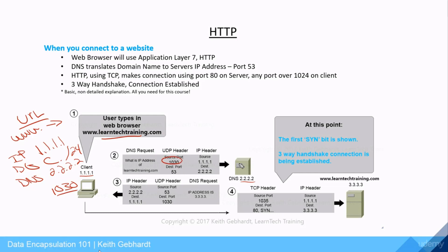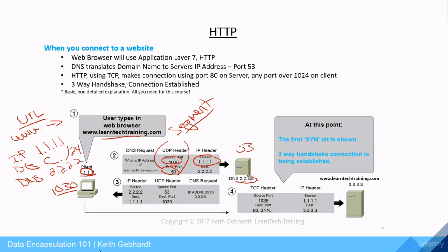Port 1030 is our source port. The destination port is 53, because that is the well-known port for a DNS server. This block of source and destination port information is known as our segment, and remember segments are Layer 4. The source IP address is 1.1.1.1 from our client, and it's going to the DNS server at 2.2.2.2, which is our destination address. This combined IP addressing information is known as our packet.